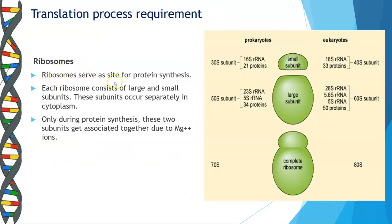Ribosomes serve as the site for protein synthesis. Each ribosome consists of large and small subunits which occur separately in the cytoplasm. The split-up of these subunits is given for both prokaryotic and eukaryotic cells. Only during protein synthesis do these two subunits get associated together due to magnesium ions, forming the complete ribosome, which then involves in the process of translation.